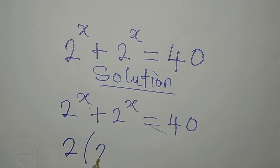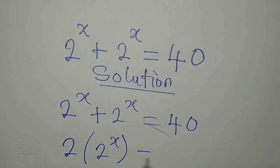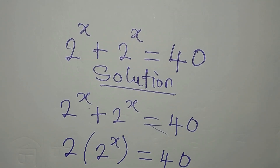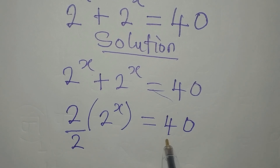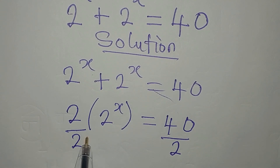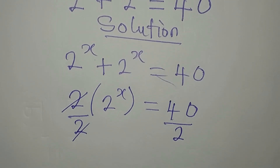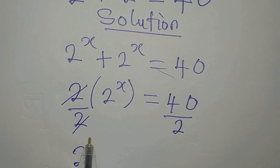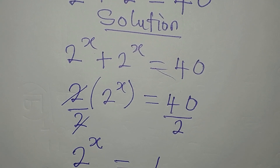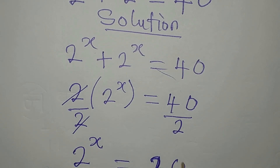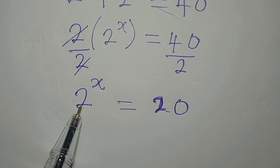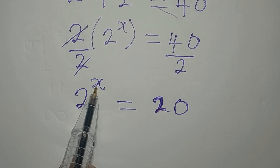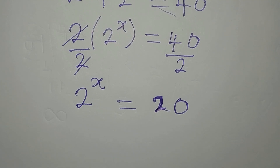We can rewrite this as 2 times 2 to the power of x, and this equals 40. The first thing you do is remove this 2 by dividing both sides by 2. So 2 to the power of x equals 40 divided by 2, which is 20. Do not divide by 2 again because you will be wrong — x is attached to the 2, so you can no longer divide both sides by 2.